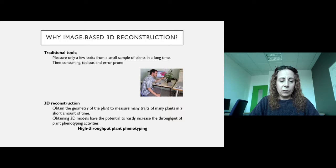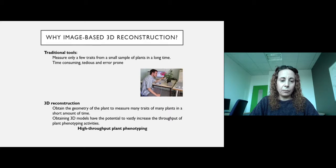On the contrary, with the 3D reconstruction method using imaging techniques, we can obtain the geometry of the plant and later measure as many traits as possible. We can do it for many plants in a short amount of time. So obtaining 3D models has the potential to vastly increase the throughput of plant phenotyping activities, which we call high-throughput plant phenotyping.